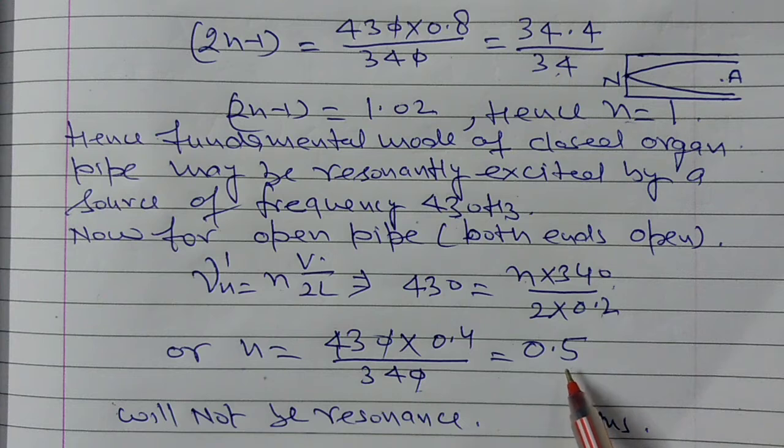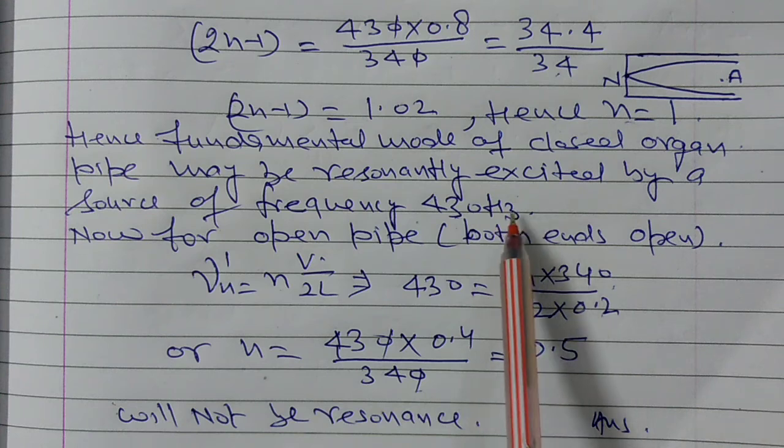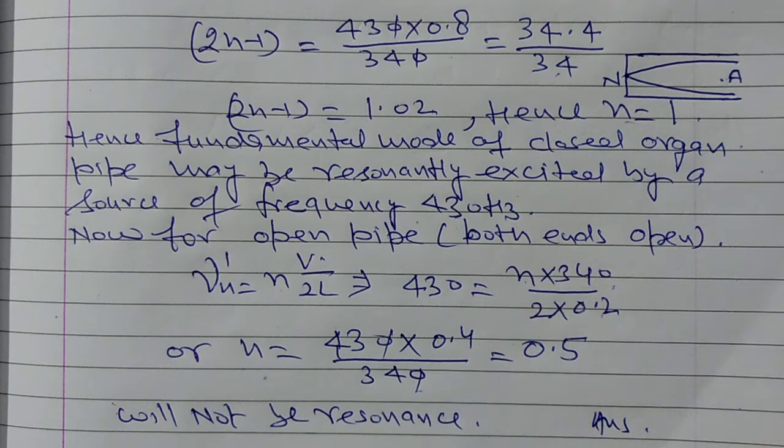0.5, this is not a complete integer, so we can say that there will be no resonance, no harmonic mode will be in resonance with the 430 Hz source, because this is not a complete integer. It should be a complete integer, but this is 0.5, not an integer, so there will be no resonance.